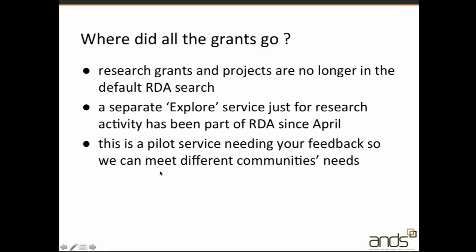Before release 15 of Research Data Australia, which went live last April, default search would return research activities, services and parties, as well as research data collections. There were already more than 40,000 ARC and NHMRC grants in the RDA system, so you would often find grants appearing when you searched. But now that the default search for RDA only returns data collections, we needed to have a separate discovery service for exploring research grants and projects.